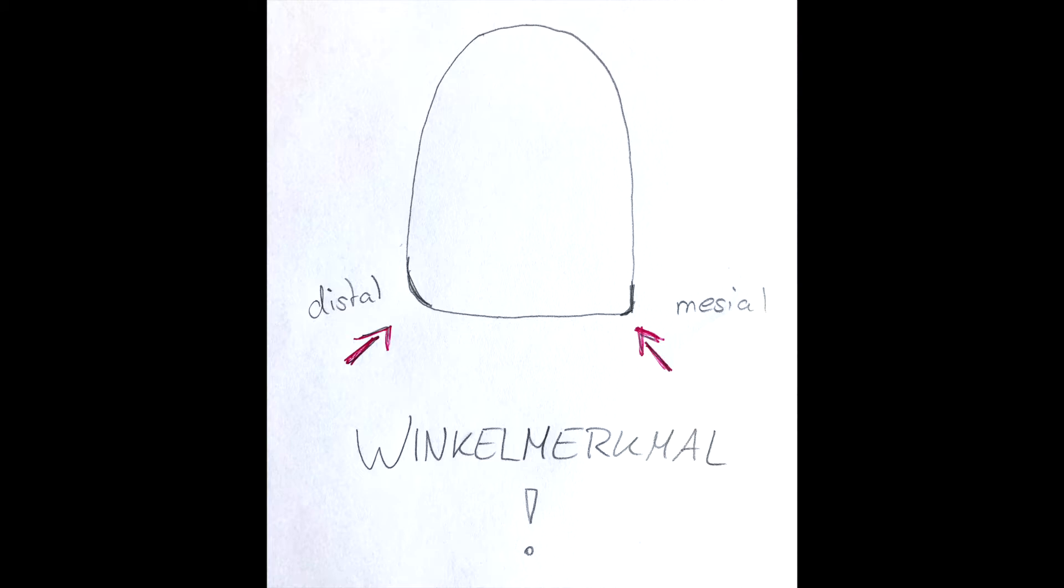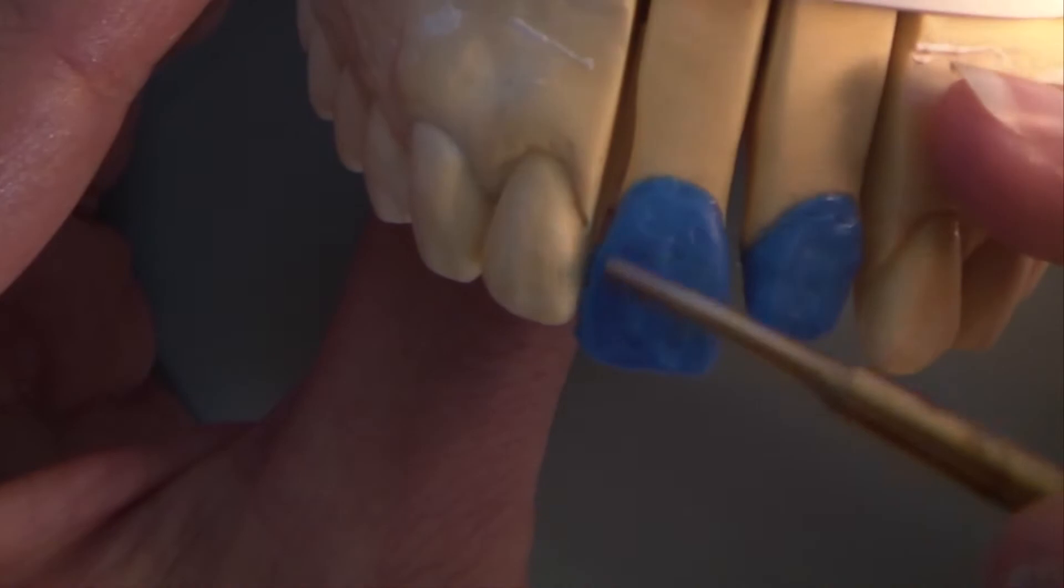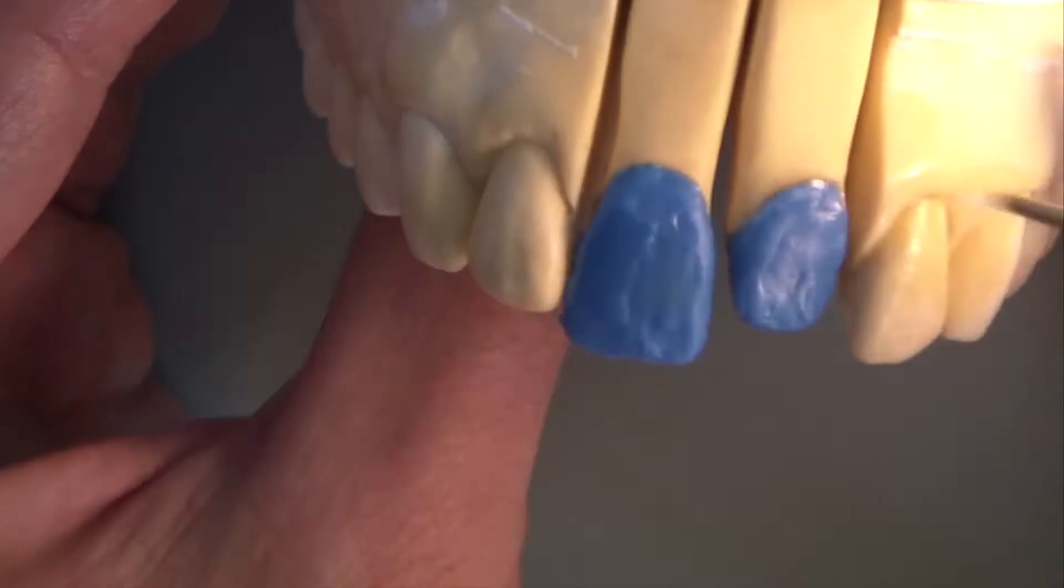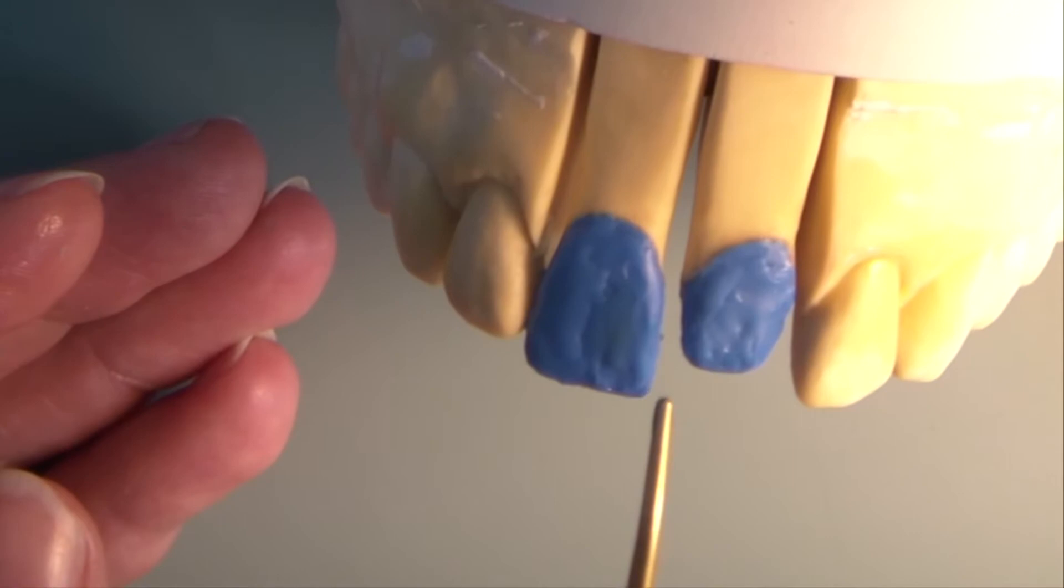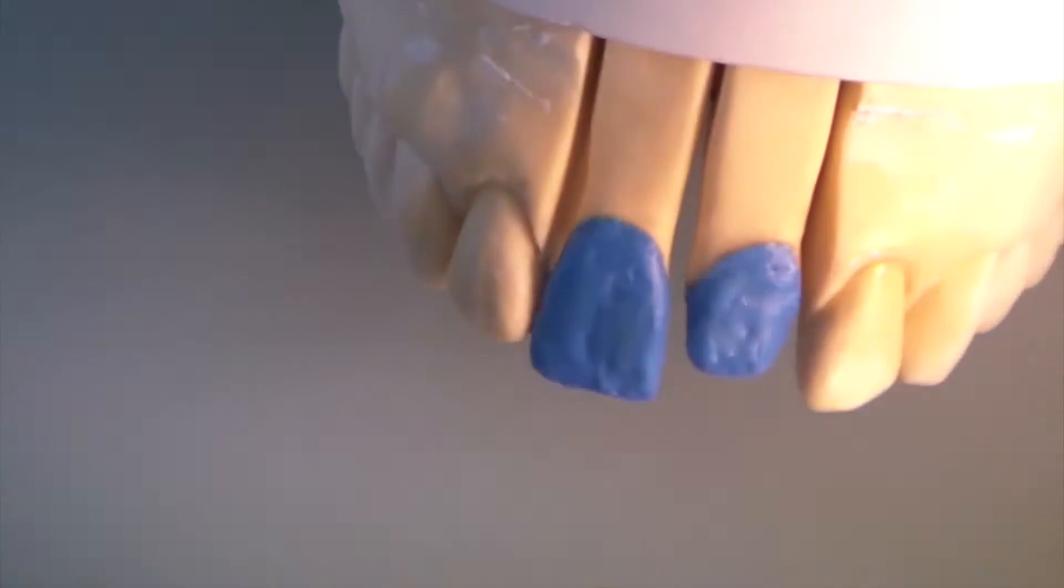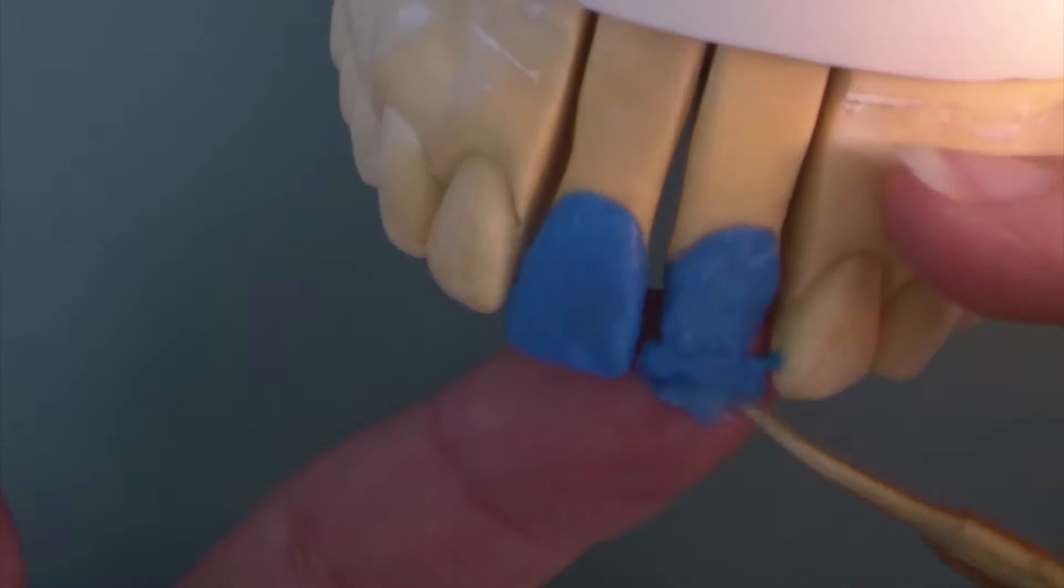I pay attention to my desired angular features, rounded distal and pointed mesial. Also I already indicate the longitudinal furrows between the mamelons. And now the same procedure with tooth 21.